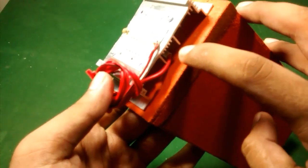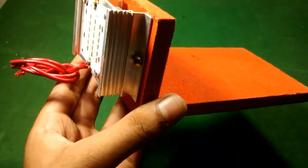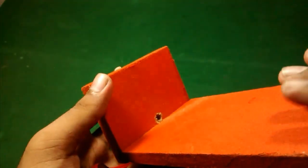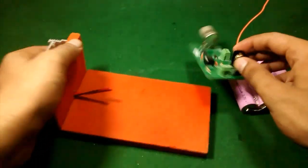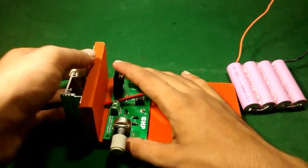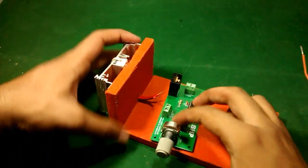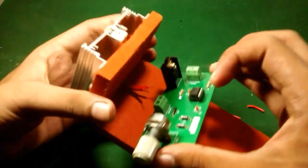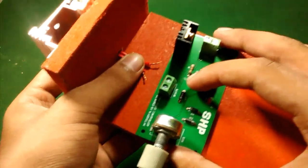And now, friends, I am going to glue this PWM controller and the battery on this board. Before gluing the controller, I am going to insert these wires at the output of our controller.